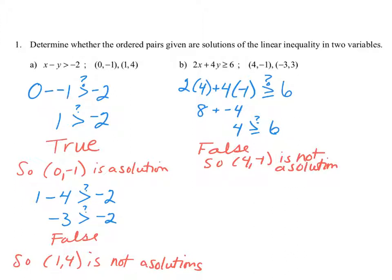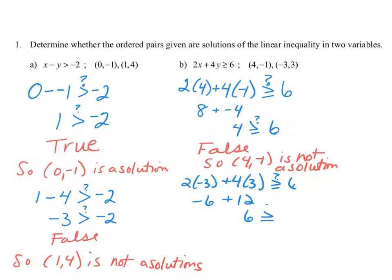Let's check with (-3, 3). Replacing x with negative 3 and y with positive 3, we check whether the inequality is true. By multiplying before we add, we get negative 6 plus 12, which is 6. Since 6 is greater than or equal to positive 6 — it's equal — the inequality is true, and (-3, 3) is a solution.